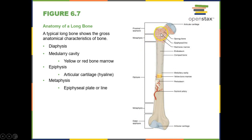At the ends of long bones we have the epiphysis — two per long bone: a proximal epiphysis closer to the point of attachment, and a distal epiphysis. The region connecting the epiphysis to the diaphysis is called the metaphysis, which contains the epiphyseal plate — a cartilaginous hyaline cartilage plate that allows us to grow in length. When we reach adult height those plates close, becoming epiphyseal lines.